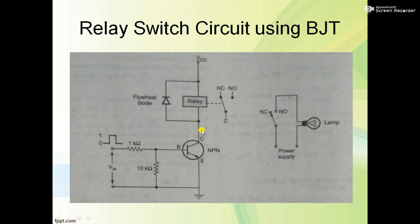When IC is zero, the CB junction also becomes reverse biased. When both junctions are in reverse biased condition, the transistor acts as an open switch, and the relay stays at normally closed condition.